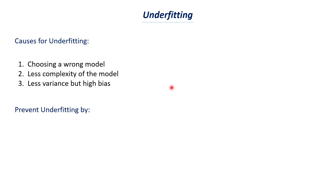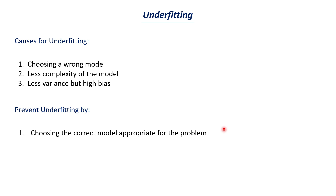Now let us see how we can prevent underfitting. First, choosing the correct model appropriate for the problem. In the example we saw, we have a parabolic relationship between x and y, so if we choose a wrong model such as a linear model we cannot get a good fit. Choosing a correct model is very important for rectifying the underfitting issue. Second, increasing the complexity of the model — if we have a simple model that is not suitable for a particular dataset, it causes underfitting, so we need a more complex model which can fit the data better.